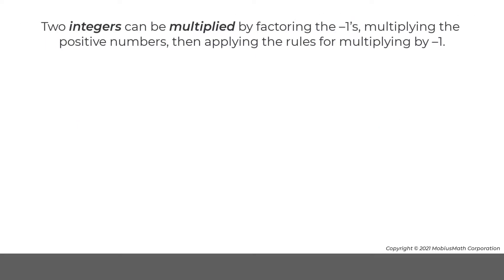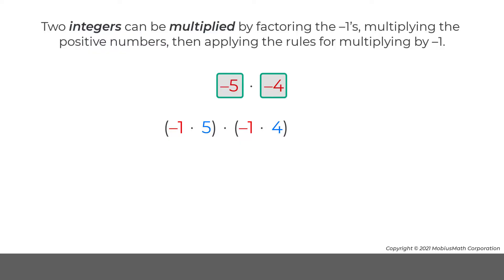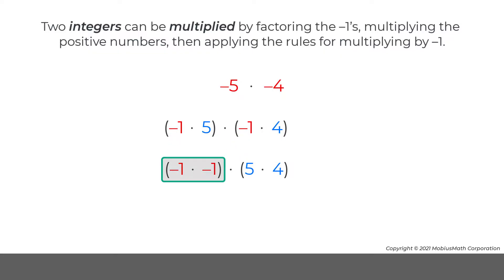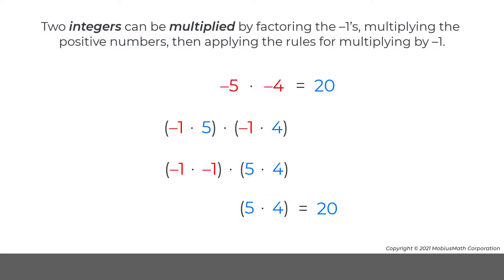Two integers can be multiplied by factoring the negative 1's, multiplying the positive numbers, then applying the rules for multiplying by negative 1. For example, negative 5 times negative 4 can be calculated by rewriting each negative number as negative 1 times a positive number. Then, the commutative and associative properties can be applied to write an equivalent expression. Since negative 1 times negative 1 equals 1, negative 5 times negative 4 is the same as 5 times 4, or 20.